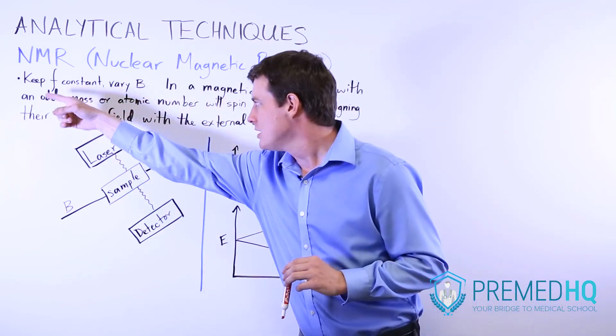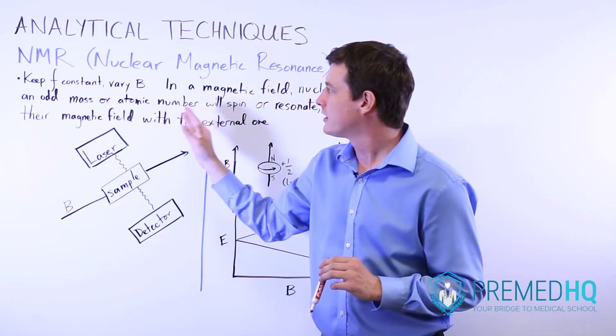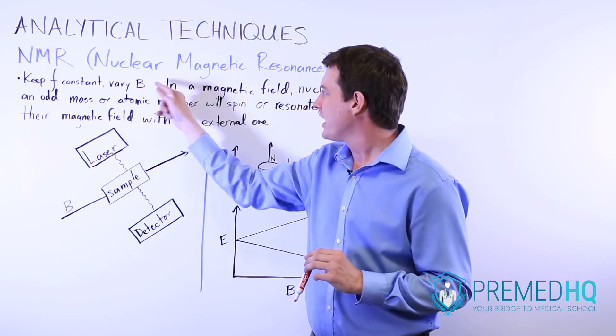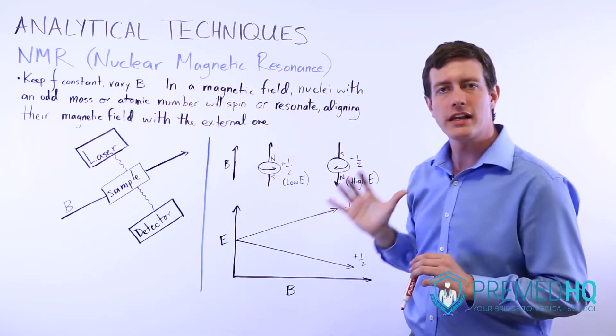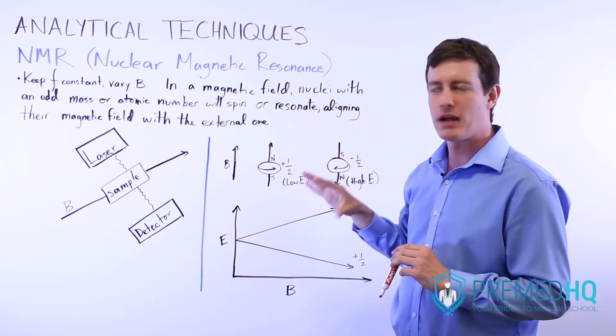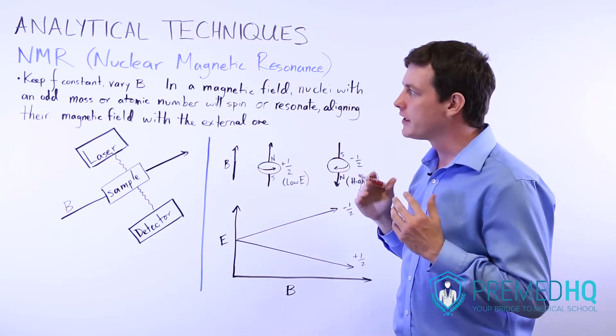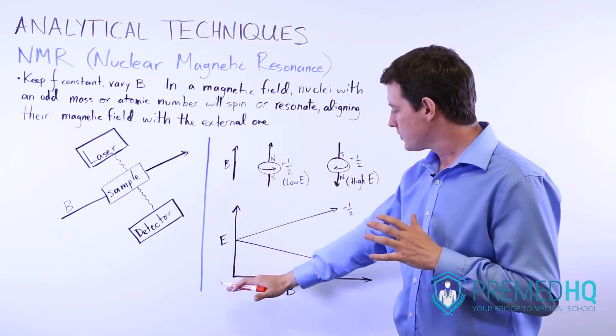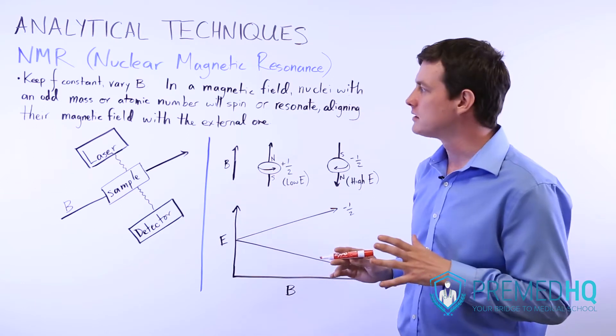NMR is a bit different because you keep the frequency of the light constant but you vary a magnetic field, an external magnetic field that you're placing your compound in, and observing what changes happen as you increase the magnetic field.